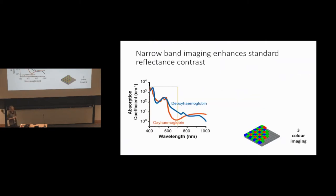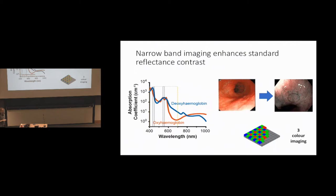Approaches like this are already used clinically. There's an approach called narrowband imaging, which enhances the standard reflectance contrast by exciting the tissue at narrow bands of wavelength that coincide with the absorption peaks of the hemoglobins. When we do white light imaging, we put light from about 400 to 700 nanometres into the tissue. What narrowband imaging does is excite very narrow wavelength bands, which allows you to go from a quite homogeneous pink image to one with much more structure where you can see the fine structure of individual blood vessels in the tissue.